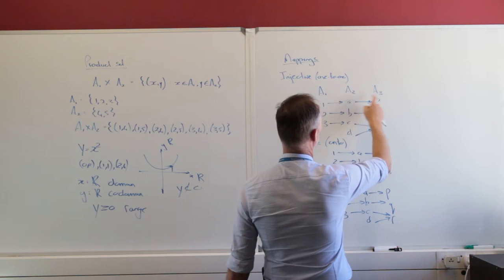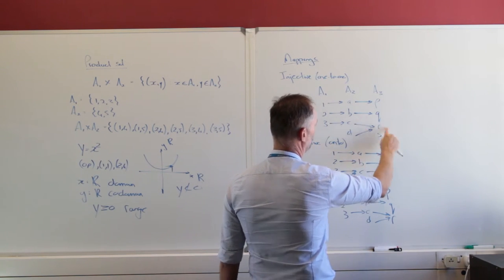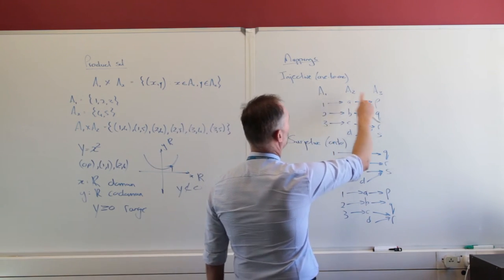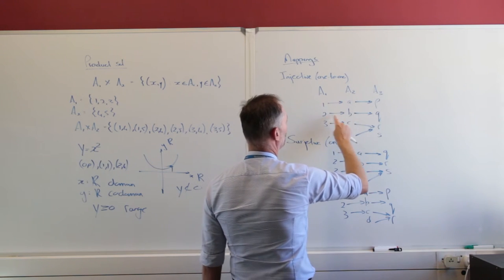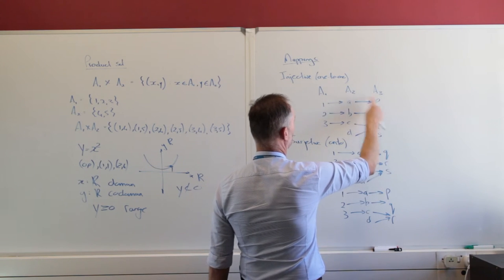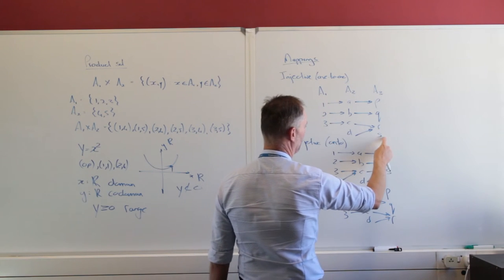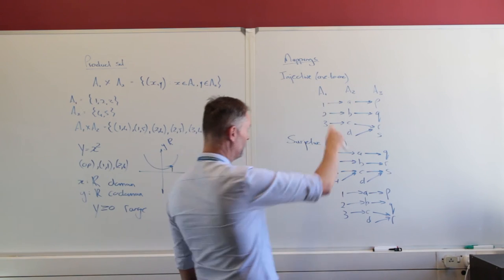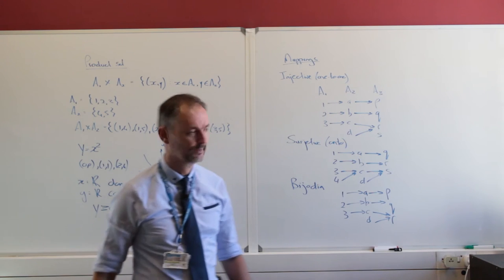Let's look at the mapping of A sub 2 to A sub 3, where A sub 3 is {P, Q, R, S}. Here R has two elements mapping to it, so it cannot be one-to-one. What about mapping A sub 1 to A sub 3 through A sub 2? One goes to P, two goes to Q, three goes to R. P has only one element mapping to it, Q only one, R only one, and S has nothing. So A sub 1 mapping to A sub 3 through A sub 2 is one-to-one.